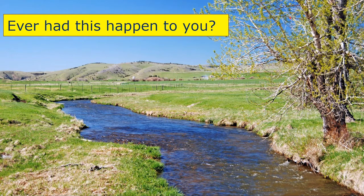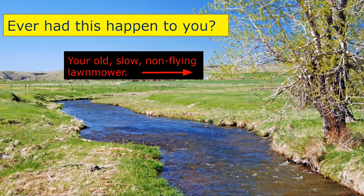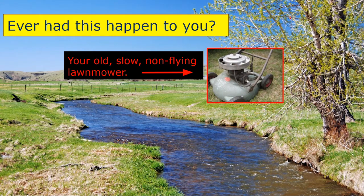You're trying to cut the grass, and unfortunately you reach a creek. You could whip out your old, slow, non-flying lawnmower and try to mow that grass on the other side. However, you would have to mow right through the creek, and there's no possible other way that you could possibly get to the other side.